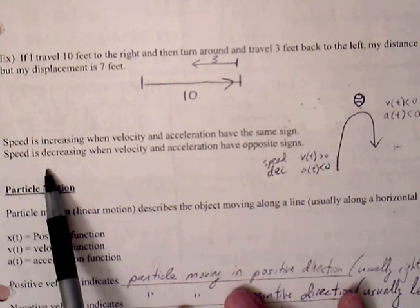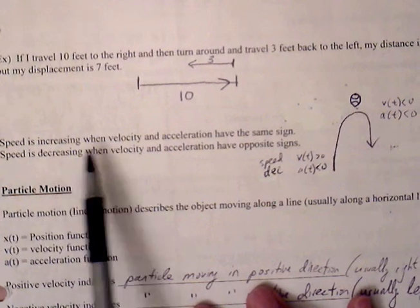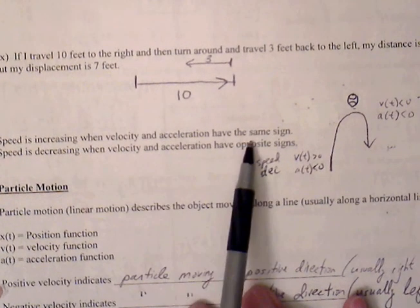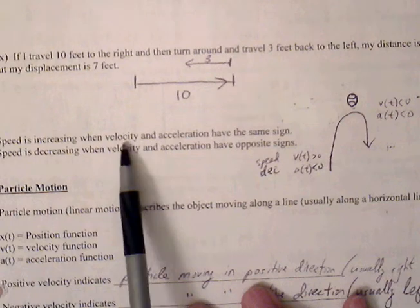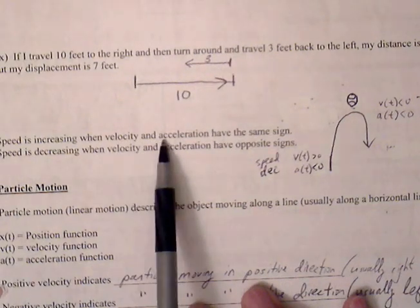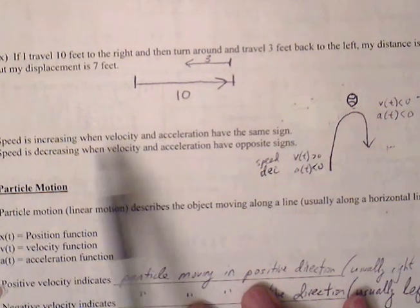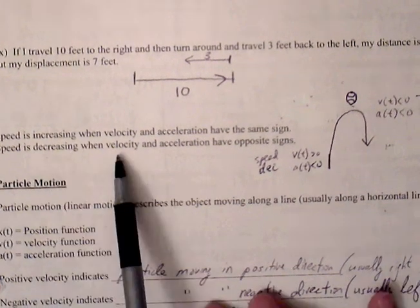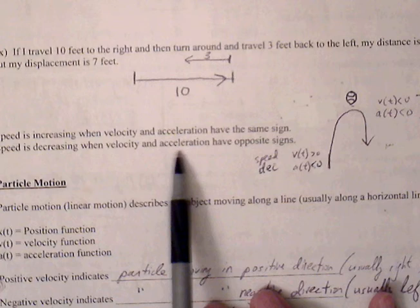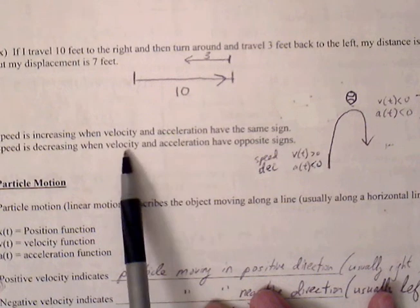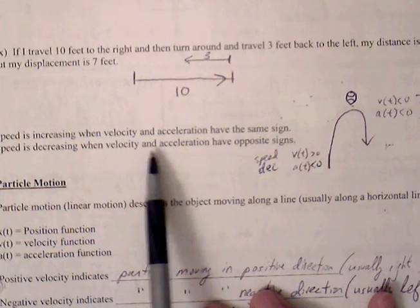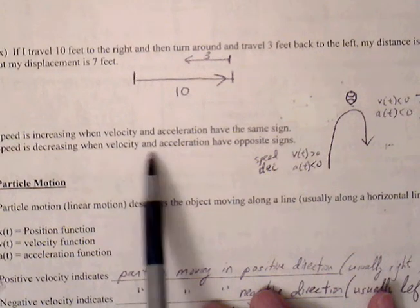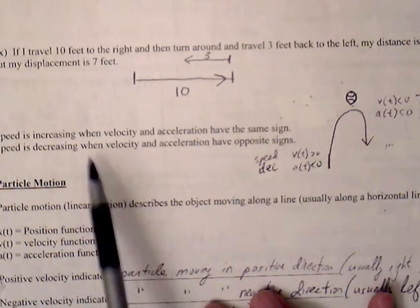Increasing speed occurs when velocity and acceleration have the same signs — either both positive or both negative. Decreasing speed occurs when velocity and acceleration have opposite signs — positive and negative, or negative and positive. Both of those situations would indicate decreasing speed.